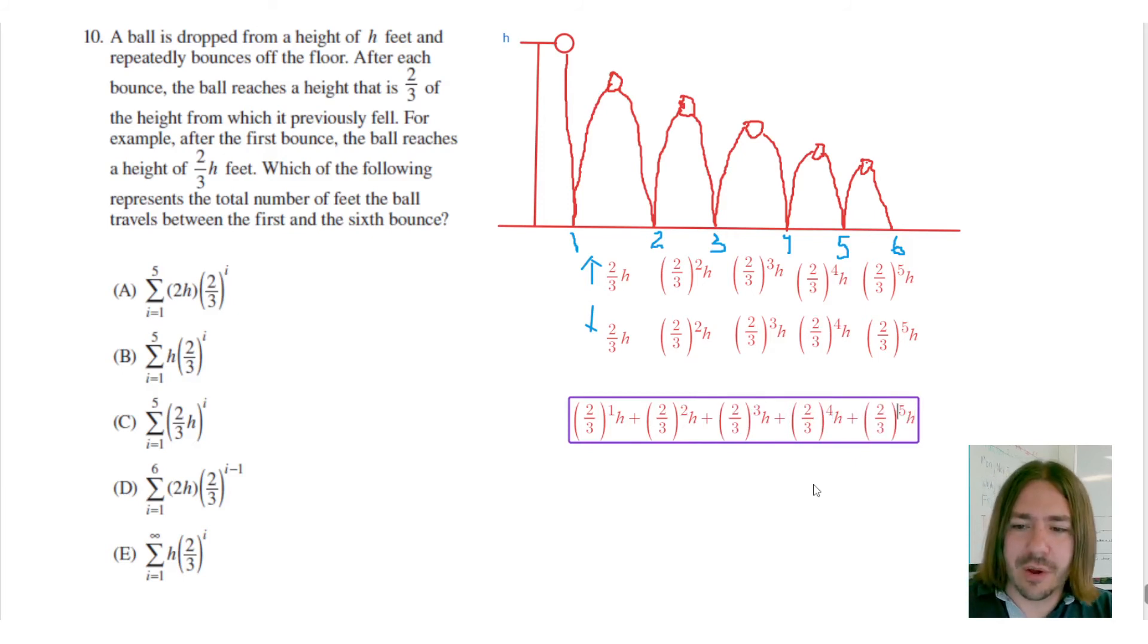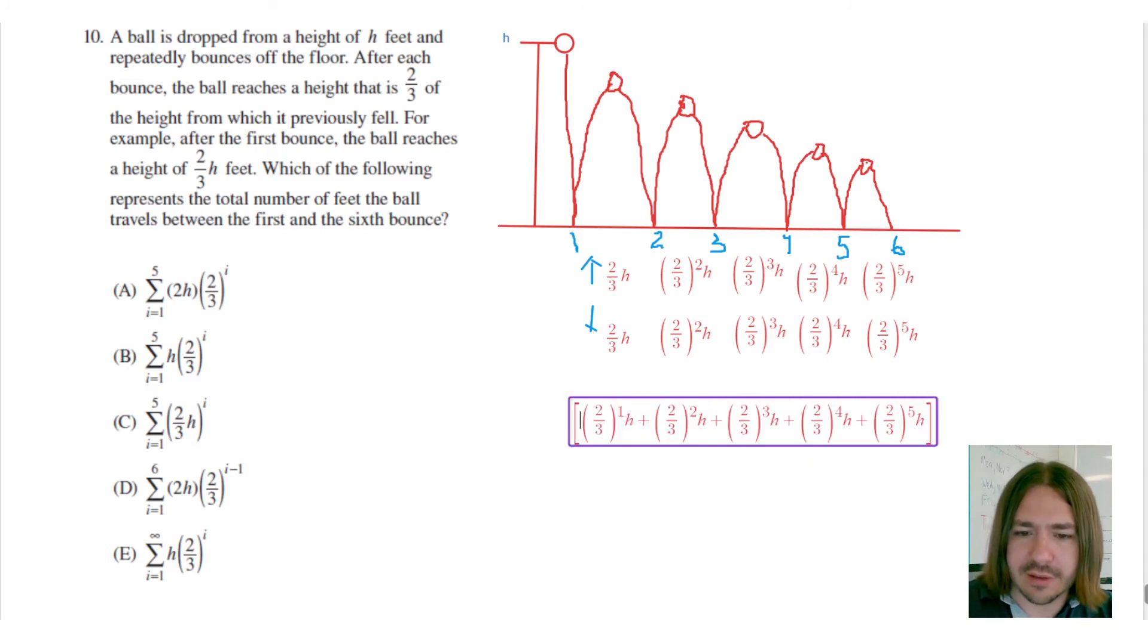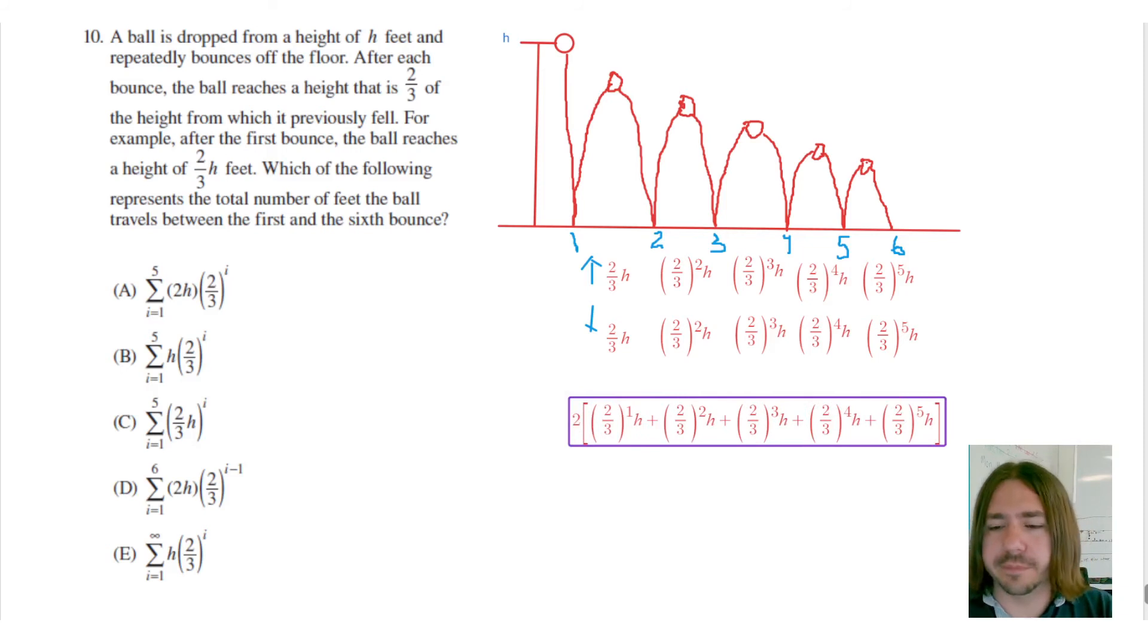Okay. So what I'm going to do is actually put all of these in brackets and say it's two times all that. So notice that each one of these little expressions look exactly the same, except for the exponent here is changing. It's one, two, three, four, five. So let me explain this notation here.